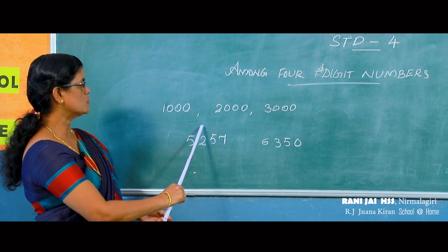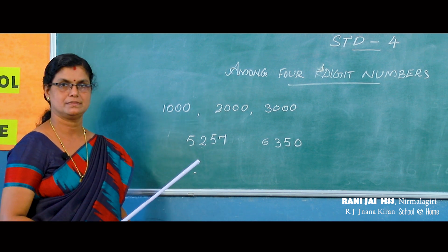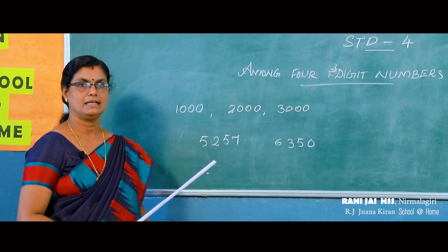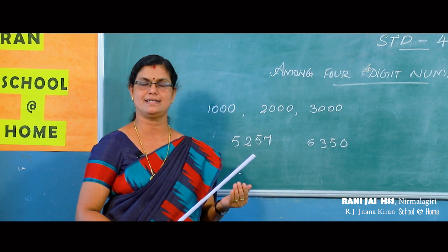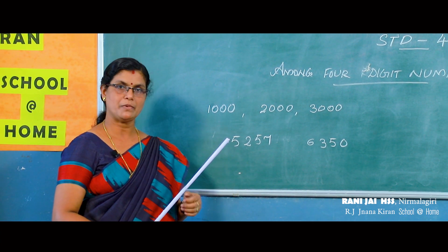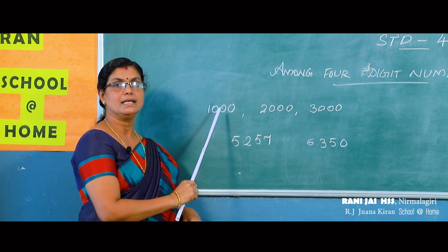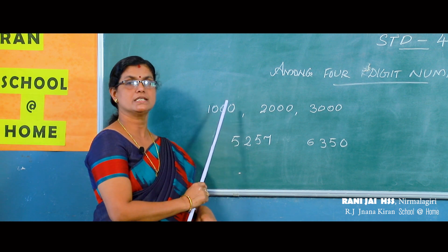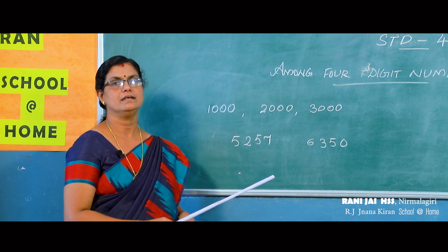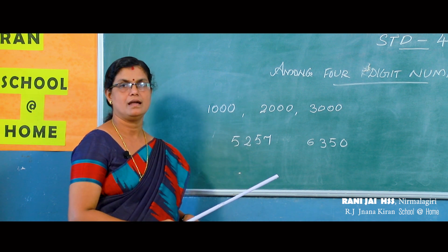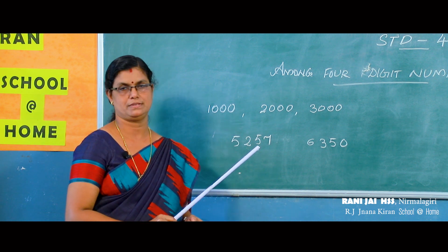From this we can say that 1000 is the smallest four-digit number, and 999 is the largest three-digit number. Today we have got one more important point: 1000 is the smallest four-digit number. Now next we are going to study how to write a four-digit number.